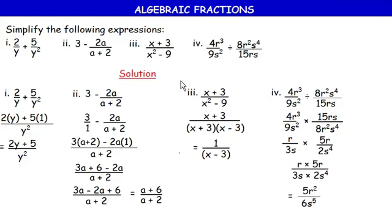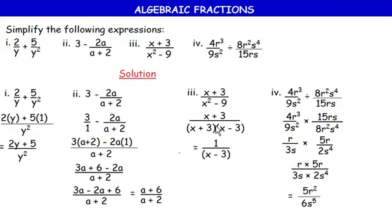For (x + 3)/(x² − 9): apply the difference of two squares. x² − 9 = x² − 3² = (x + 3)(x − 3). So the expression becomes (x + 3) / [(x + 3)(x − 3)]. Cancel (x + 3) from numerator and denominator. Final answer: 1/(x − 3).